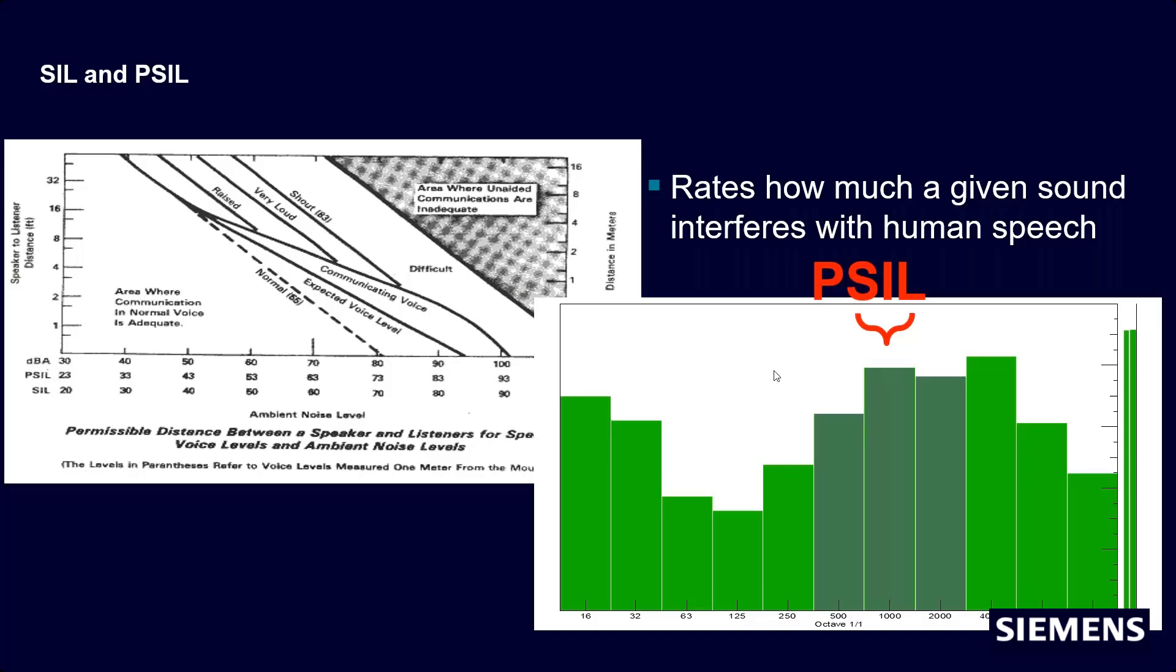So PSIL is calculated using these three bands, SIL's these three bands, and ANSI's all four.